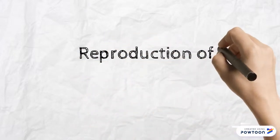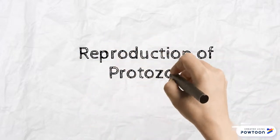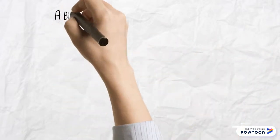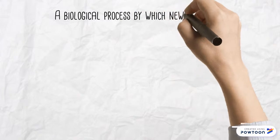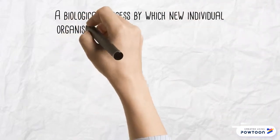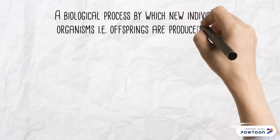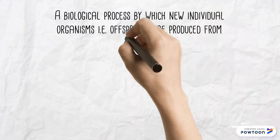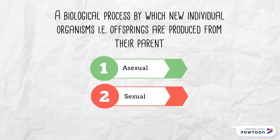Hi, I'm John Marcel Fernandez and I am here to discuss with you about the reproduction of protozoa. Reproduction is a biological process by which new individual organisms, for example offspring, are produced from their parents. There are two types of reproduction: asexual and sexual.